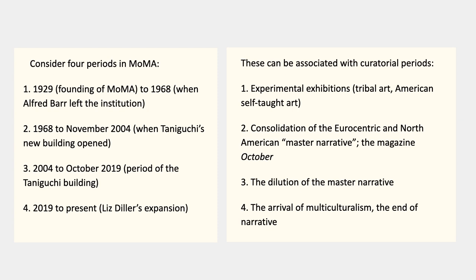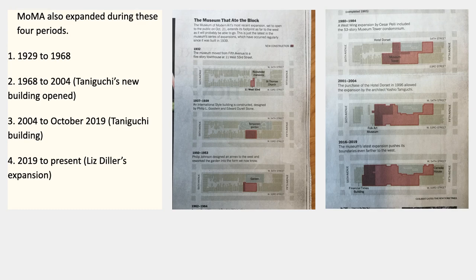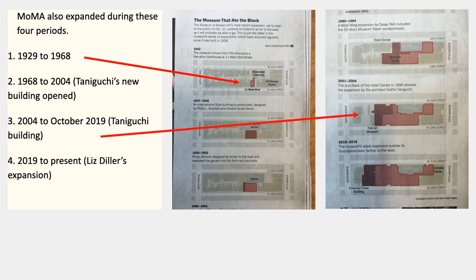The third period is the dilution of that same master narrative by the inclusion of art from outside the central countries and narratives. The fourth period is the sudden arrival of multiculturalism and the possible absolute end of that narrative. Here's one of the printouts of the place that MoMA has on the block in Manhattan between 5th and 6th Avenue. In the first period, 1929 to 1968, it was just a little building. The Taniguchi building is a large extension — it keeps buying more and more of the block, which you could also study from a real estate perspective.